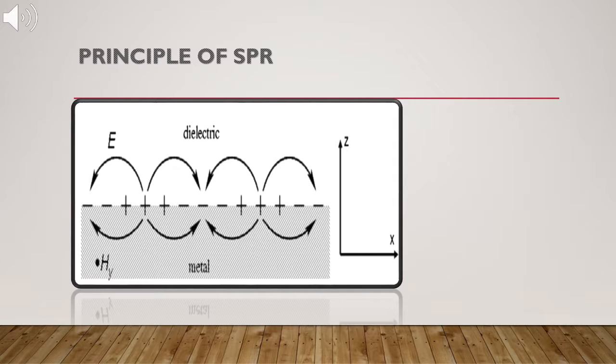Evanescently confined in perpendicular direction, they are longitudinal waves with magnetic vector perpendicular to the plane of incidence.